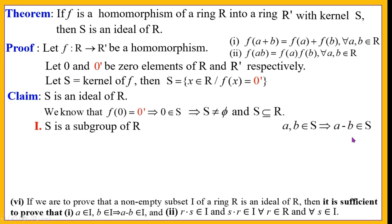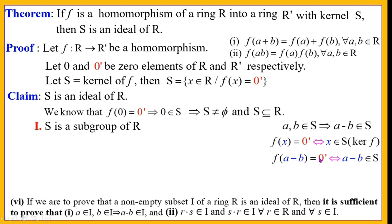To show a − b belongs to S, we need to show f(a − b) = 0', since x belongs to S if and only if f(x) = 0'. Let a, b belong to S. Then by definition of kernel, a in S implies f(a) = 0' and b in S implies f(b) = 0'. Now we need to consider f(a − b) and show it equals 0'.